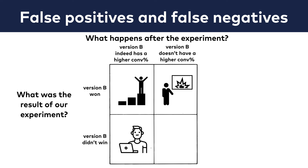Version B didn't win on the test but would have won in real life — that's a false negative, and that's not ideal either, because you lose money by not using the better-converting new version. But usually, since version B didn't win, it wasn't published, so you never truly find out whether it was a false negative or not. And when B didn't win and it wasn't better, that's the status quo — nothing happens.